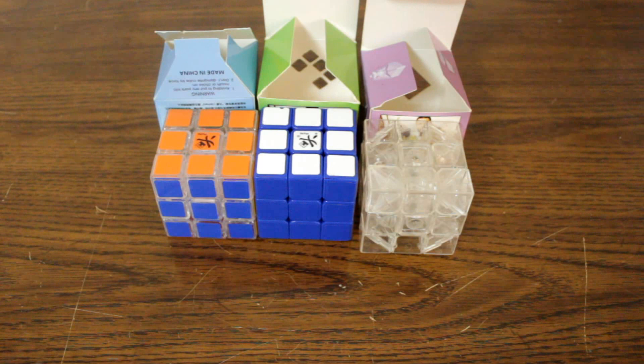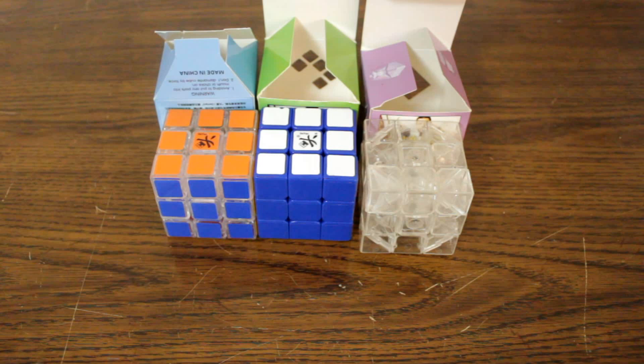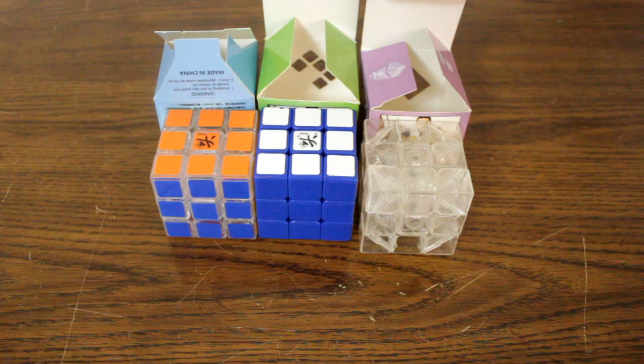A lot of the prototypes that were released for other cubes, you could tell a difference just by looking at it, that it's a totally different cube. But this one, you would really have no idea unless you were told it was a prototype. Which brings me to the transparent Zanchi.